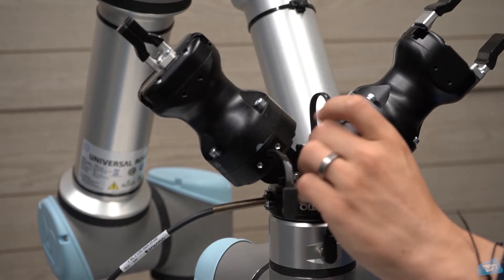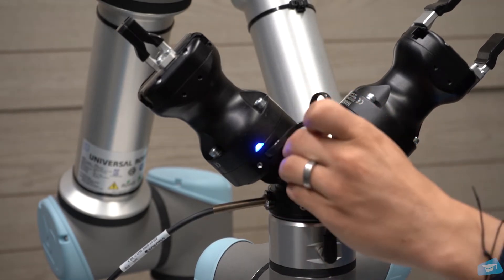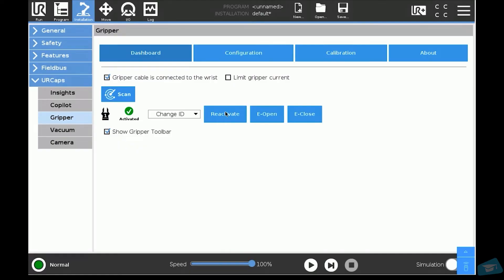Now, disconnect the gripper and connect the second gripper to the M8 splitter. Do the same procedure than with the first gripper, but make sure to assign a different ID to the second gripper.